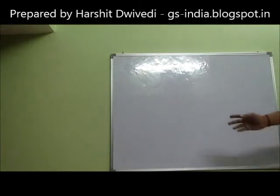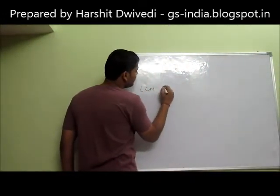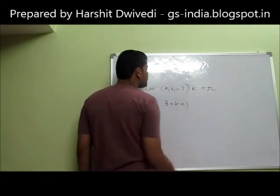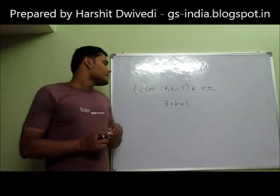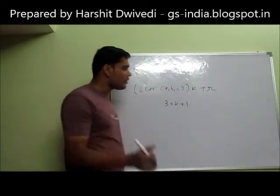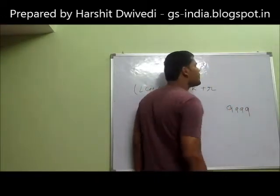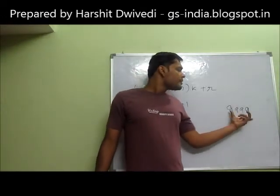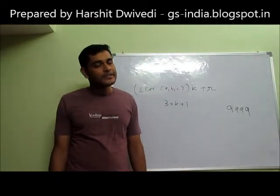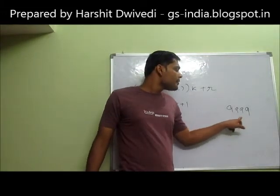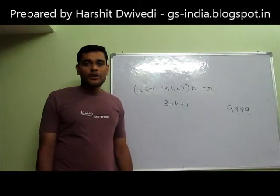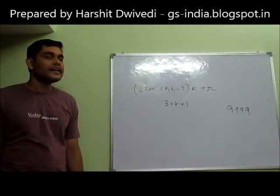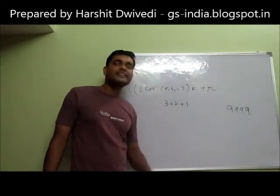The formula is LCM × K + R, which in this situation is 30K + 1. We have to find out the largest possible 4-digit number which is of this form. The largest possible 4-digit number is 9999. Now we have to reach that number — first of all, if we reach a number greater than 9999 it becomes 10000, which is a 5-digit number. So we have to look for numbers lesser than 9999 and find a number divisible by 30 which is less than 9999.